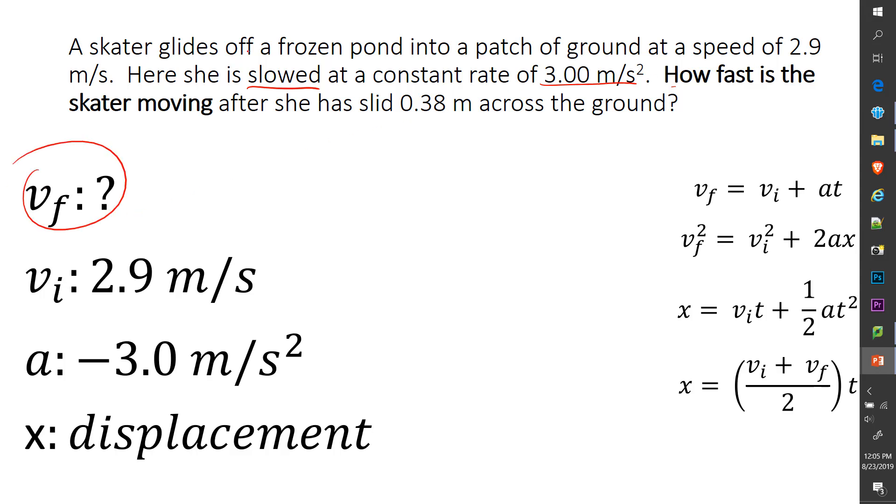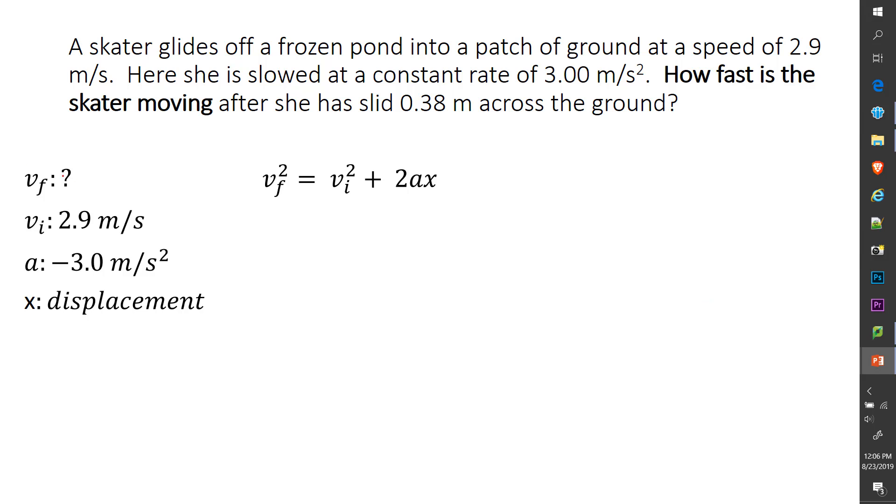It has the speed was 2.9 meters per second before she slowed. And then she slowed, so it's going to be accelerated but decelerated at 3.0 meters per second squared. And then you have your displacement, x, which is 0.38. We know that. And so because I have these givens and I don't have time, I want to get rid of anything that has time in it. I can't have that. Leading me to one equation only.